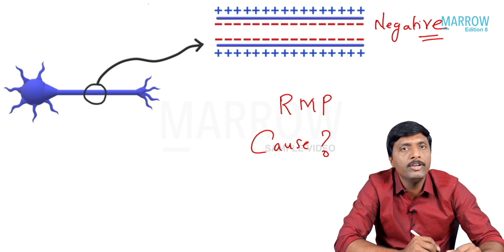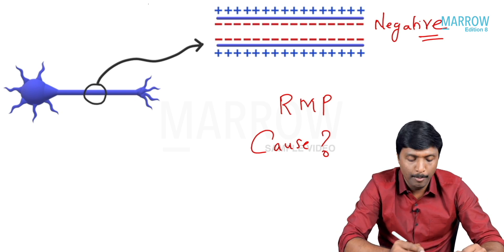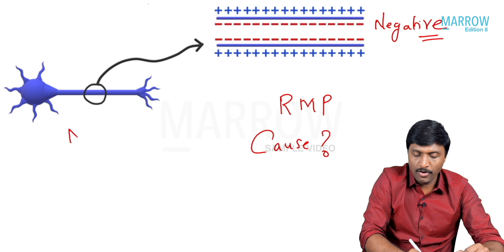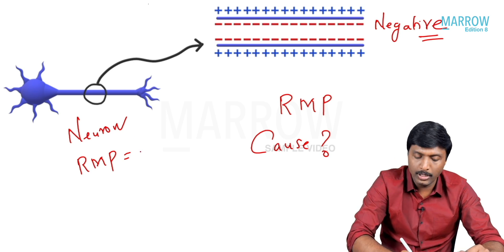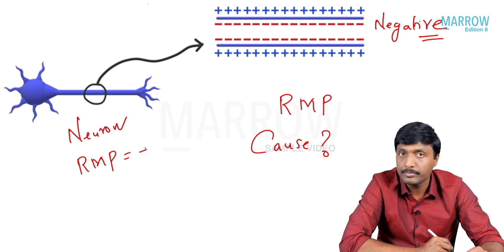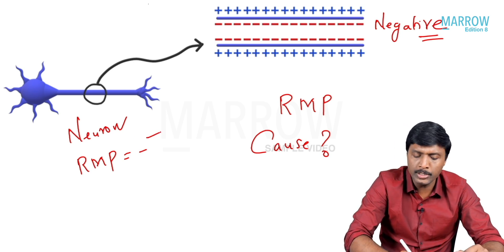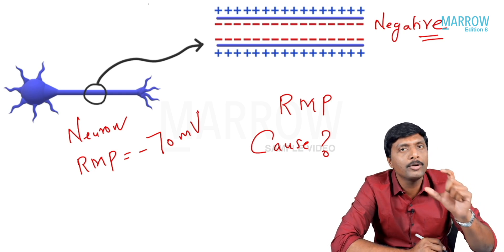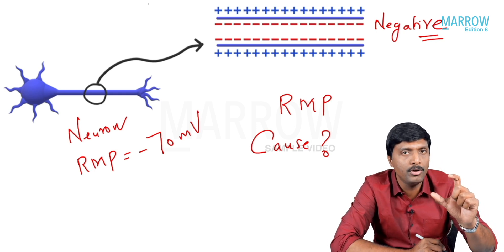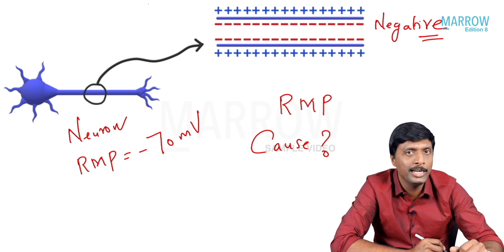If it is negative and we have connected to a voltmeter, what value will it show? Particularly for a neuron, this resting membrane potential is obviously a negative value. It is going to be minus 70 millivolt. The resting membrane potential of a neuron is minus 70 millivolt.